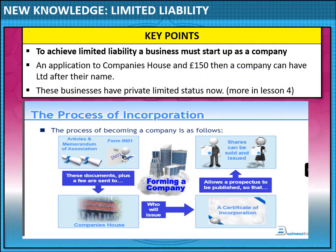We're going to go now onto key points of limited liability — this is all new knowledge for you. To achieve limited liability, a business must start up a company. It's an application to Companies House and it actually only costs £150 to do this, and then you can have 'limited' after your business name. These businesses have private limited status — we're going to discuss that more in lesson four. Underneath the PowerPoint you can see how you actually form a company.